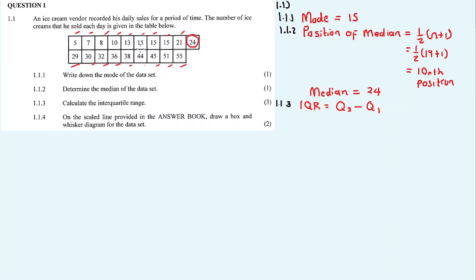The data set on the left of the median gives the lower quartile Q1, and the data set on the right of the median gives the upper quartile Q3. I won't use the formula. Counting 1, 2, 3, 4 values on the right side, the middle of those is 38, so Q3 = 38.